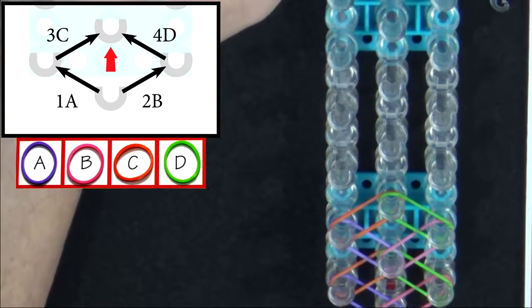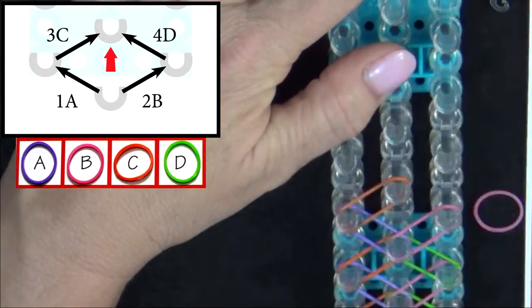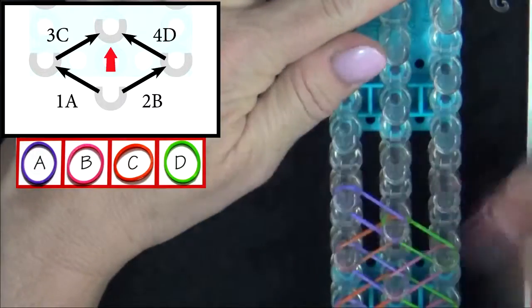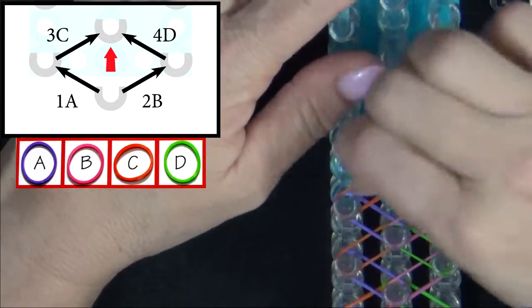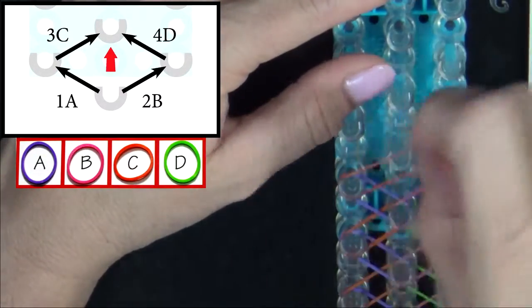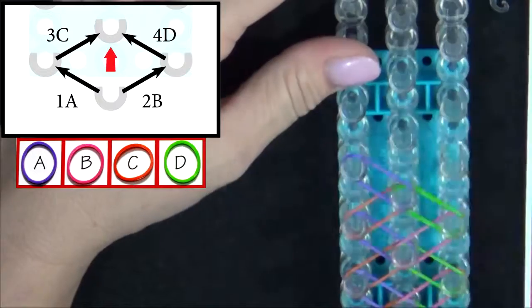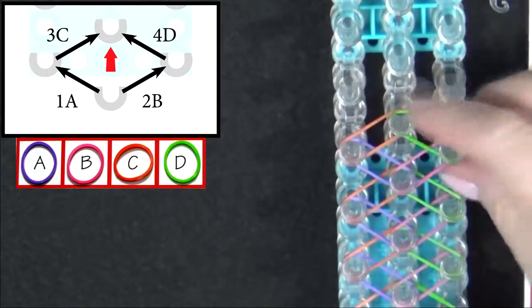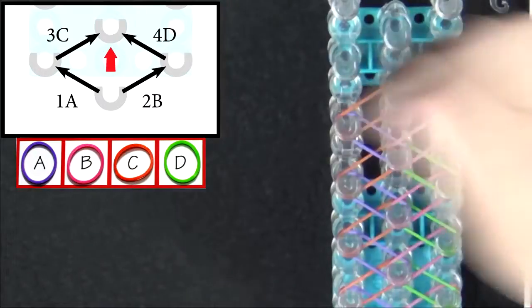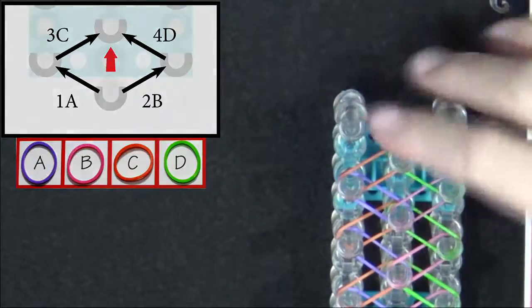Pause the video here and refer to the diagram on your screen until you reach the end of the loom. We'll fast forward from here. And the last band will be placed to the center.